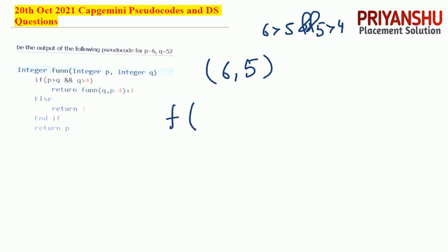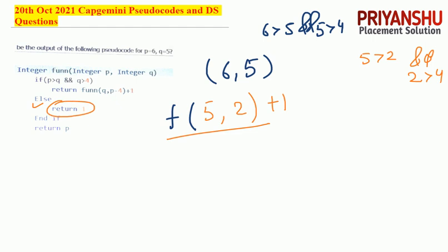The function is called again with q = 5 and p minus 4 = 2, plus 1. Now with p = 5 and q = 2: p is greater than q — true; but q = 2 is greater than 4 — false. So it moves to the else part and returns 1. Therefore 1 plus 1 equals 2.